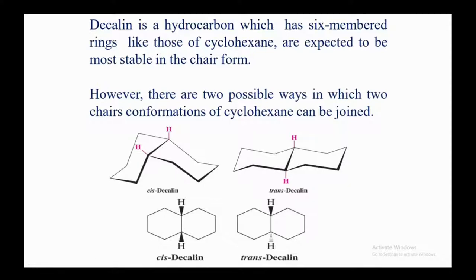There are two possible ways in which two chair conformations of cyclohexane can be joined. In cis-decalin, both hydrogens at the ring junction are on the same side. In trans-decalin, the two cyclohexane rings are parallel — one hydrogen is on the bold line and the other is on the dotted line.